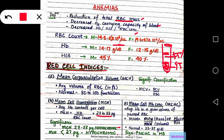Then we come to mean cell hemoglobin concentration, which denotes the average hemoglobin in a given volume of packed RBC. MCHC can be derived by dividing MCH by MCV — that is total mass of hemoglobin by total volume of the RBC — so it is mass by volume, which is essentially the density of hemoglobin in the RBCs. Normal MCHC value is 33 to 37 gram per decilitre. Its significance is that it is increased in hereditary spherocytosis due to dehydration of the red blood cells.